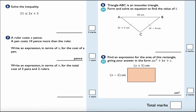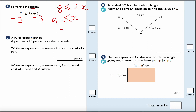This is question number 6: solve the inequality. I treat inequalities the same as an equation — subtracting 3 from both sides, 21 take away 3 is 18, giving 18 is less than or equal to 2X. Dividing both sides by 2, I get X is greater than or equal to 9, or reading left to right, 9 is less than or equal to X — which is the same thing.